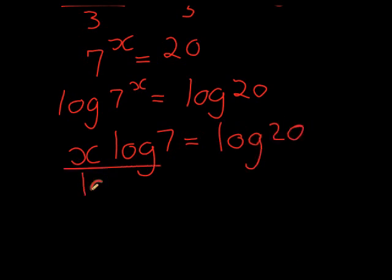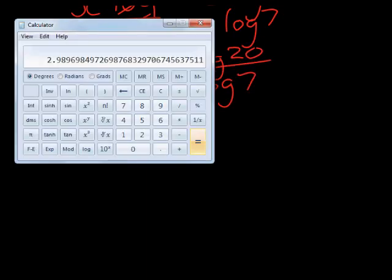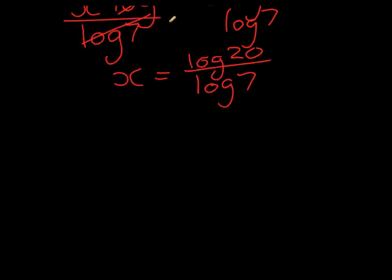And now divide both sides with a log 7. On one side it cancels out completely, and on the other side we have x equals log 20 divided by log 7. So I'll do that on the calculator: log 20 divided by log 7.